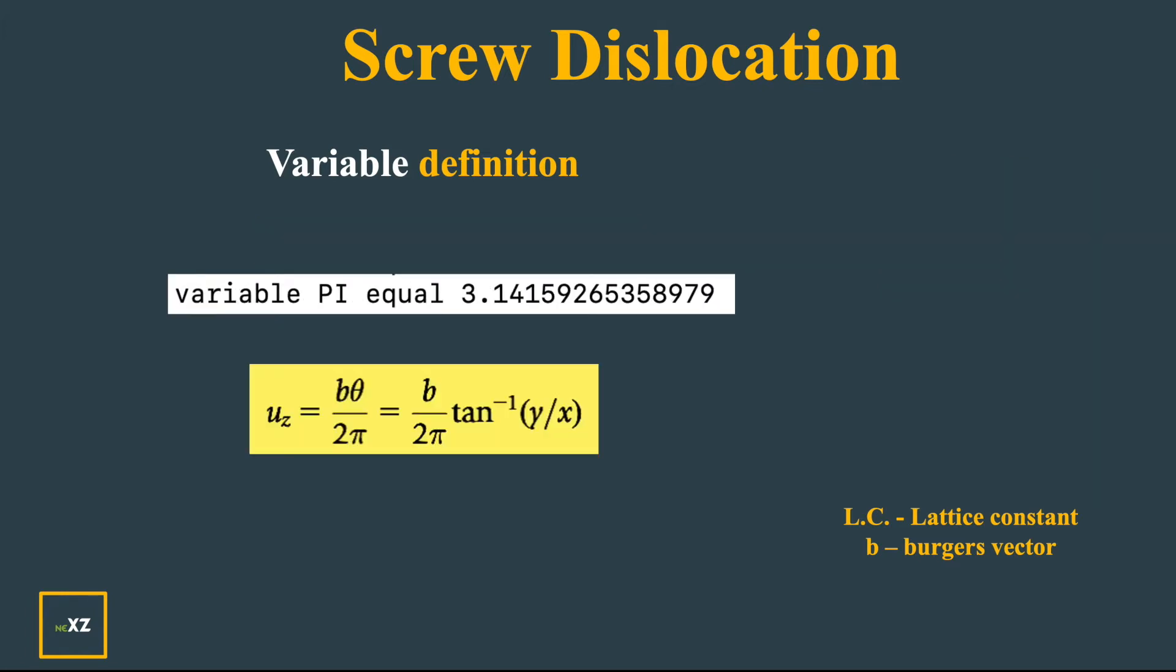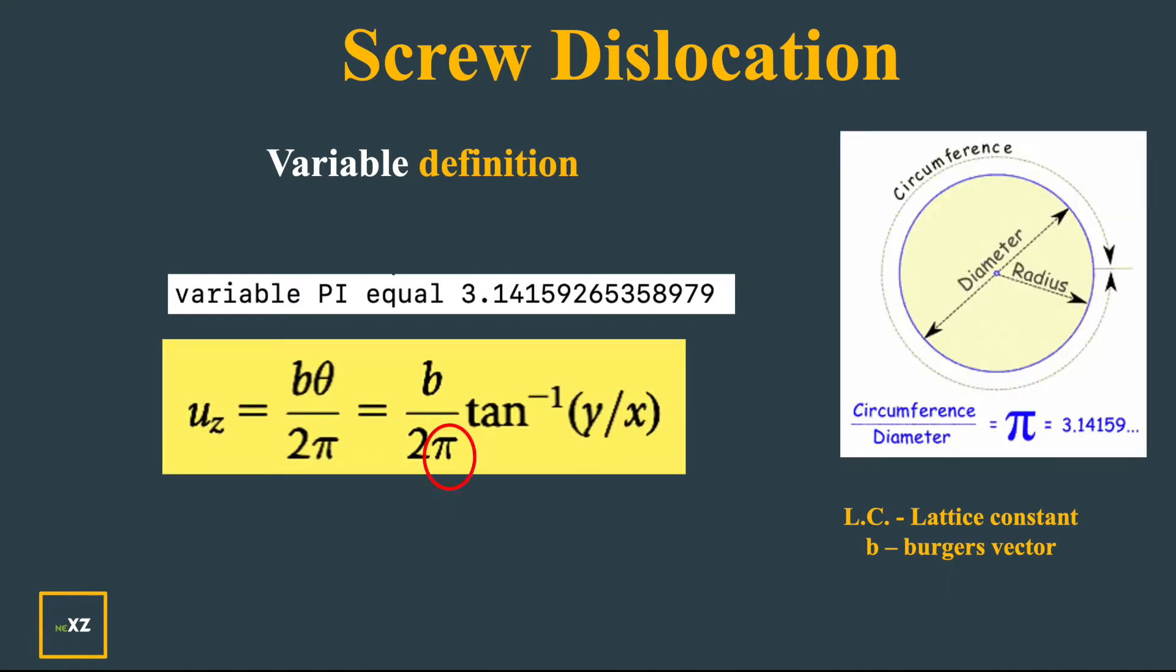Now I give the variable definition of π. As you know, π is the circumference of a circle divided by the diameter. And the tan inverse y by x is given by atan of y by x. Atan means arc tan - that is how LAMMPS reads tan inverse.